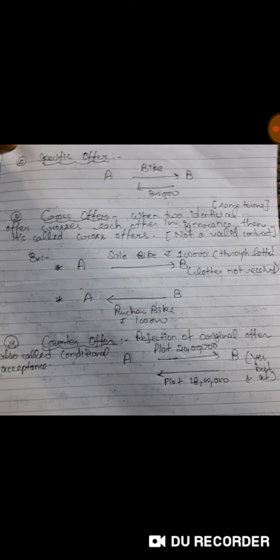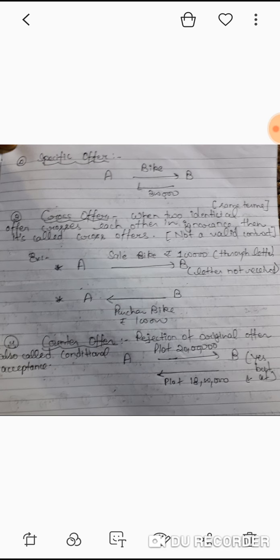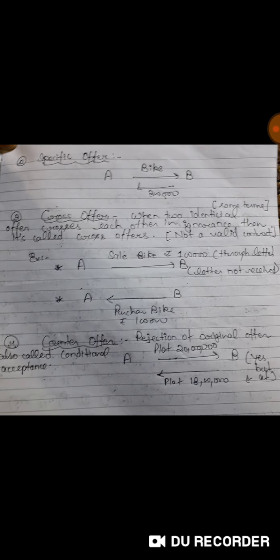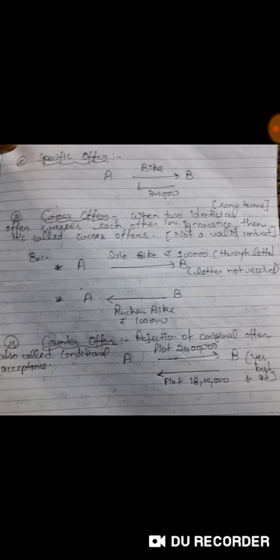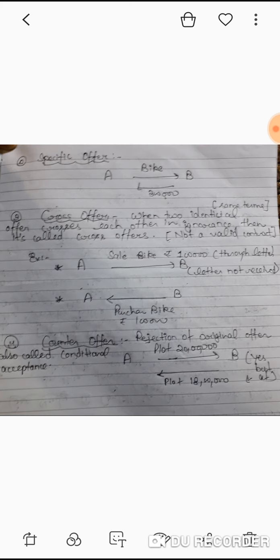B said that I agree, and the contract is made between A and B. That is specific offer. Specific offer is given to a specific particular person.